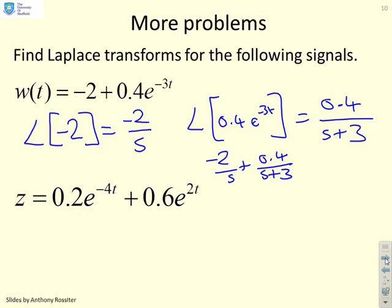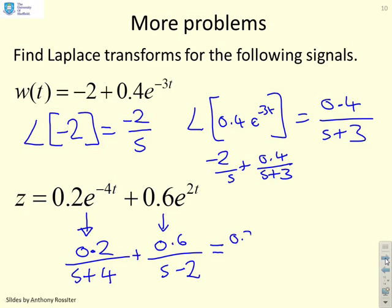For the next one down here, then if I just do this more quickly, the Laplace of the first signal is going to be 0.2 over s plus 4. The Laplace of the second signal is going to be 0.6 over s minus 2, and again here you could multiply up, and right therefore I've got 0.2 into s minus 2 plus 0.6 into s plus 4 divided by s plus 4 times s minus 2.